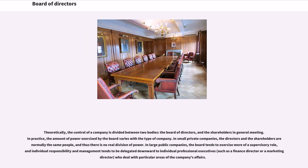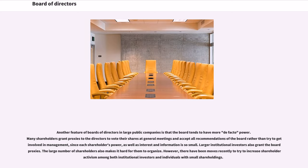In small private companies, the directors and the shareholders are normally the same people, and thus there is no real division of power. In large public companies, the board tends to exercise more of a supervisory role, and individual responsibility and management tends to be delegated downward to individual professional executives, such as a finance director or a marketing director, who deal with particular areas of the company's affairs. Another feature of boards of directors in large public companies is that the board tends to have more de facto power. Many shareholders grant proxies to the directors to vote their shares at general meetings and accept all recommendations of the board rather than try to get involved in management, since each shareholder's power, as well as interest and information, is so small.